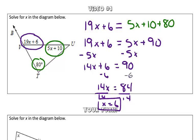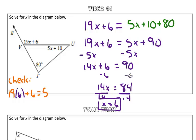So what we can do is we can go back and substitute this value in to see if our value checks out. And to check this, we're saying, does 19 times 6 plus 6 equal 5 times 6 plus 10 plus 80? When we simplify this, on the left-hand side we get 120, and on the right-hand side we also get 120. So our work checks out. Nice work!